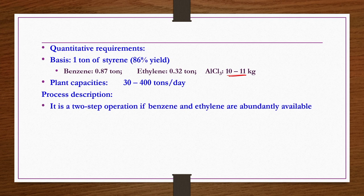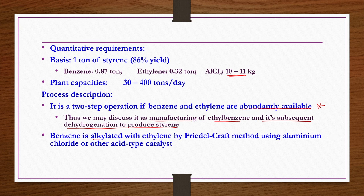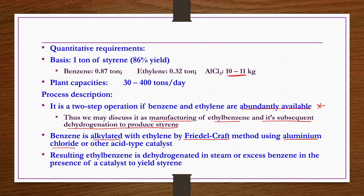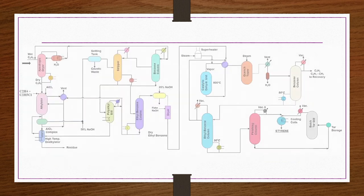The process is a two-step operation since benzene and ethylene are abundantly available, which is very common in India. First, ethylbenzene is manufactured, then it undergoes subsequent dehydrogenation to produce styrene. Benzene is alkylated with ethylene by the Friedel-Crafts method using aluminum chloride or other acid-type catalyst. The resulting ethylbenzene is dehydrogenated in steam or excess benzene in the presence of a catalyst to yield styrene.